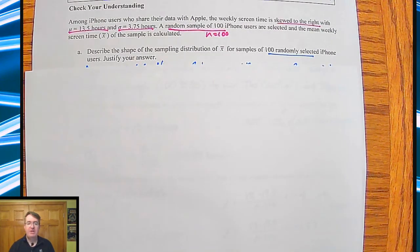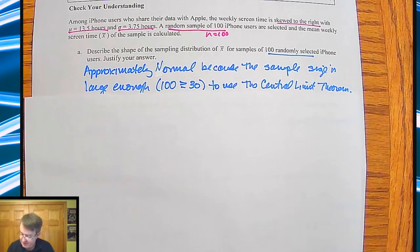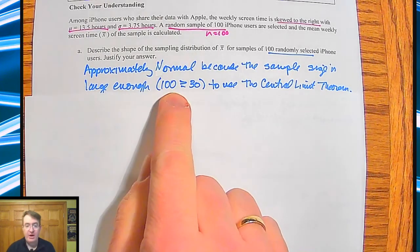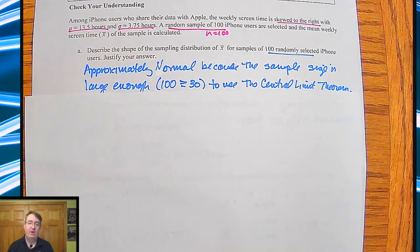So the first thing that they ask you to do is this. Describe the shape of the sampling distributions for x-bar and for samples of 100 randomly selected iPhone users. Justify your answer. We can say it's approximately normal because the sample size is large enough. And you do need to state that 100 is bigger than 30 to use the central limit theorem. So we've checked our normality. We're good to go there.